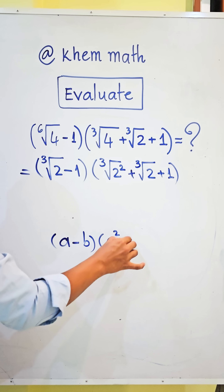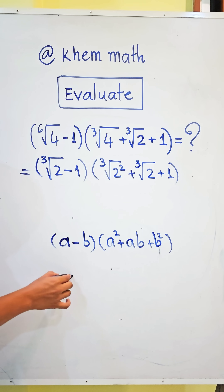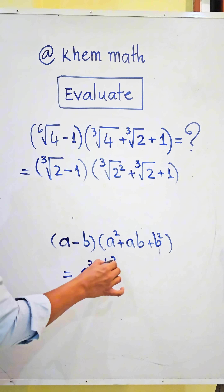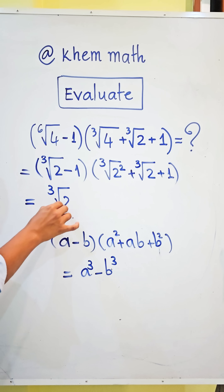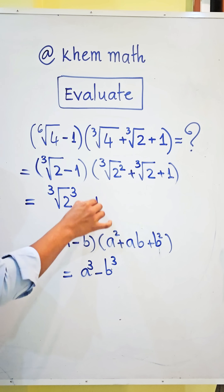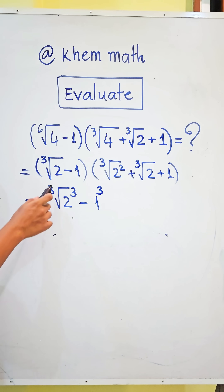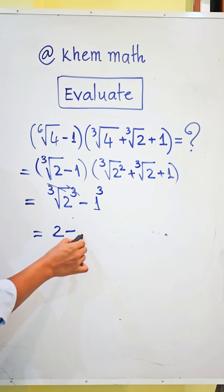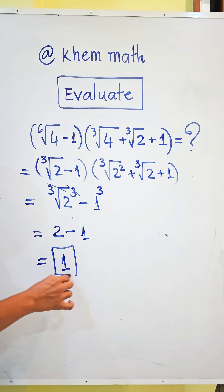That formula equals a cubed minus b cubed. So the expression equals: cube root of 2, cubed, minus 1 cubed. The cube root and the cube power cancel, giving us 2 minus 1, which equals 1. That is our answer.